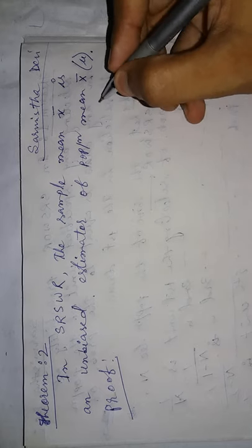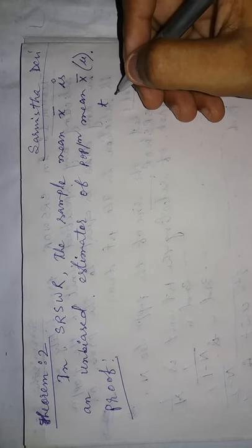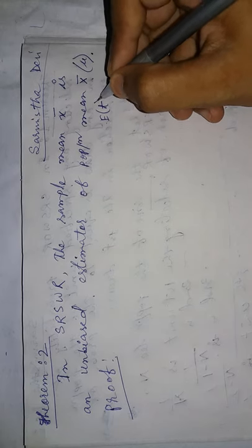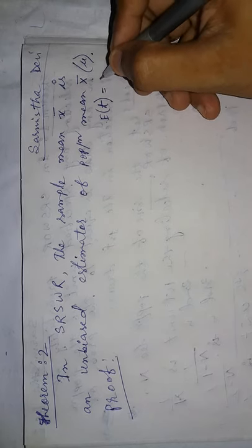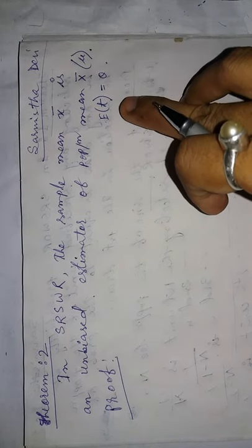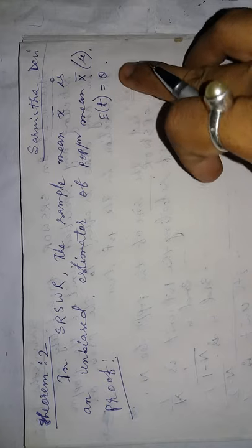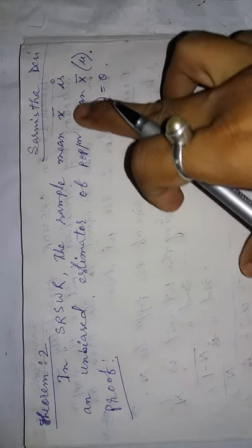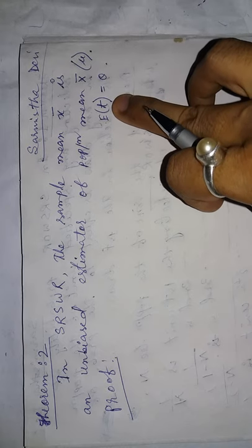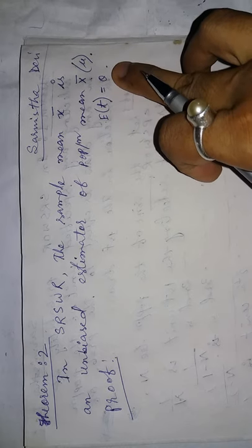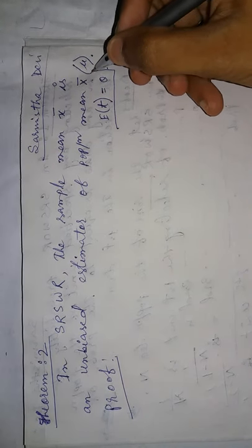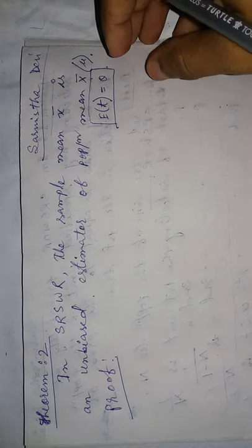Suppose the estimator is t, the unbiased estimator is the expected value of t must be equal to theta. Suppose my question is that t is an unbiased estimator of theta, the condition for unbiased will be like this: the expected value of the estimator equals the parameter. So if this condition is fulfilled, I will find the unbiased estimator.